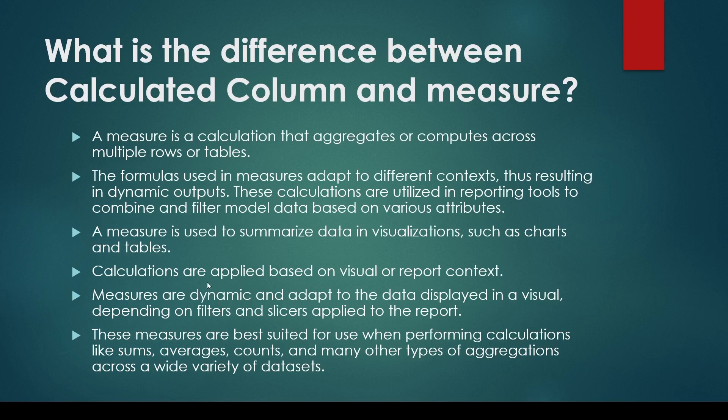Your column also has to aggregate when it becomes part of a bar visual. Let's say I created this gross sales and want it to become part of the bar visual where I want gross sales on the value axis - then it has to become sum of gross sales, or count, or min, or max of gross sales. A measure has to use calculations applied based on the visual or report context. Measures are dynamic and adapt to the data displayed in the visual depending on filters and slicers applied to the report. These measures are best suited for calculations like sum, average, count, and many other types of aggregation across a wide variety of datasets.